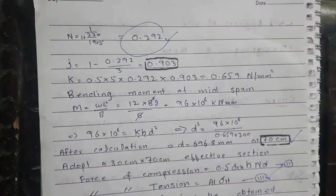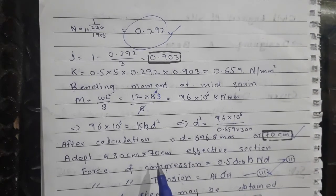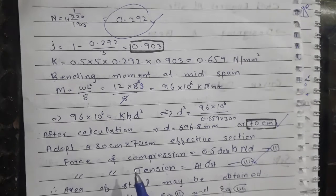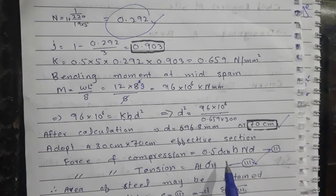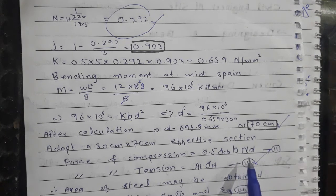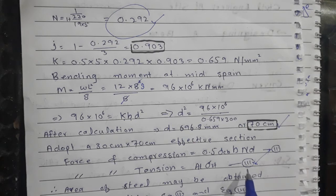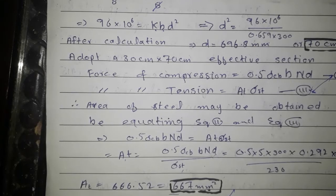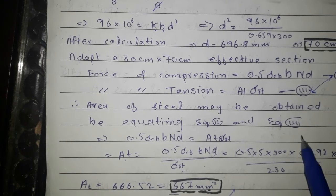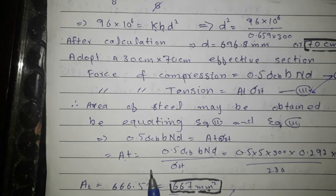The depth of the beam is 70 cm. We adopt a section of 300 mm × 700 mm. Force of compression C = 0.5 × permissible compressive stress × b × n × d (Equation 2). Force of tension T = area of steel × permissible tensile stress in steel (Equation 3). Area of steel is obtained by equating Equation 2 and Equation 3.